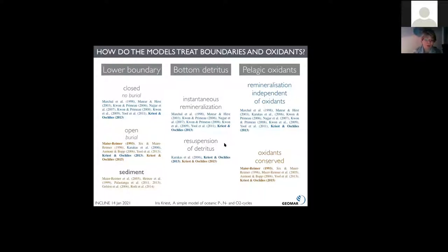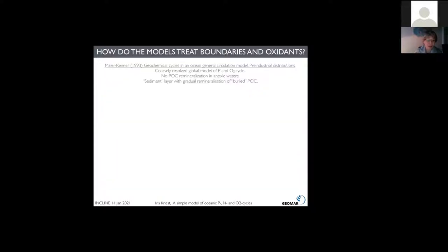A great zoo of different model types. I'd like to focus on just a few, and I would indeed like to start with a very old model, namely the one by Ernst Mayer Reimer, published in 1993. That was a rather coarsely resolved model that later on evolved into the Hamburg model or Hammock. He considered the pre-industrial distributions of tracers on the large scale. This model also already included the phosphorus and oxygen cycle, which is quite remarkable for 1993. He assumed that POC remineralization stopped in anoxic waters and he also considered a sediment layer with gradual remineralization of the buried POC.